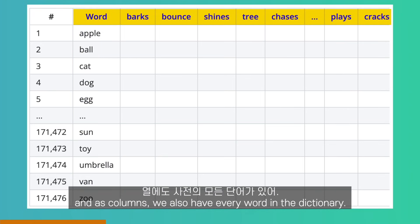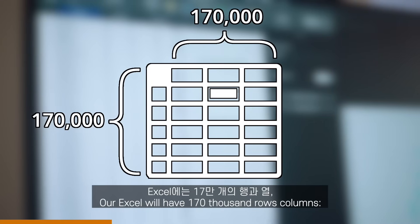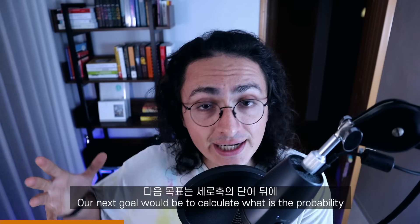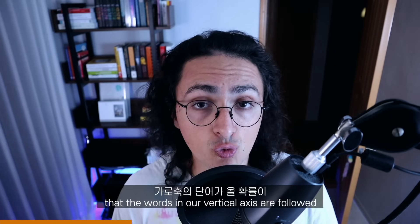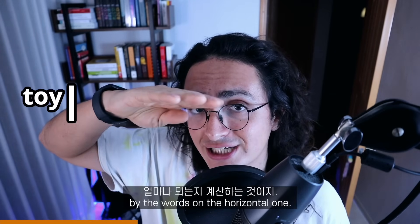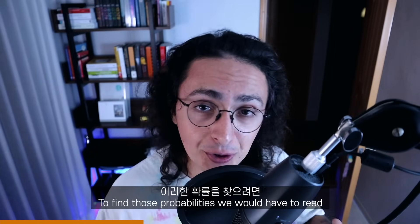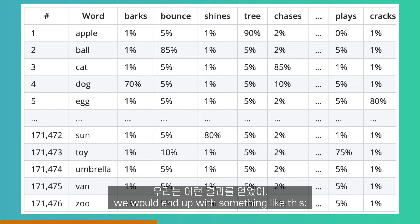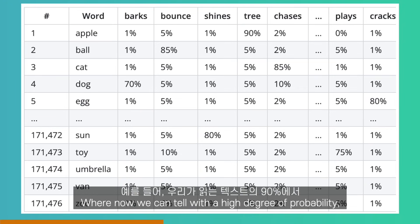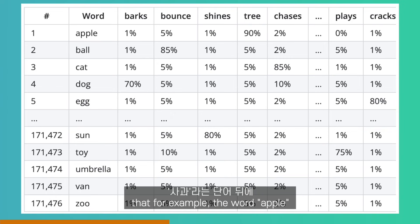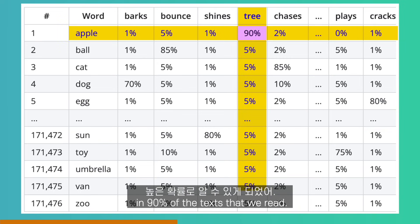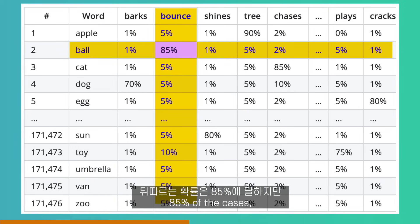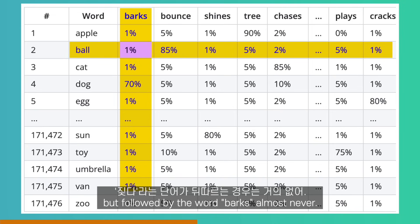As rows we have every word in the dictionary, and as columns we also have every word in the dictionary. Our Excel will have 170,000 rows and columns — almost 29 billion cells. Our next goal would be to calculate the probability that the words on our vertical axis are followed by the words on our horizontal one. To find those probabilities, we would have to read as many documents, websites, comments, papers, and books as we can. After a big effort, we'd end up with something like this — where we can tell with a high degree of probability that, for example, the word "apple" is followed by "tree" in 90% of texts, or that "ball" is followed by "bounce" in 85% of cases, but followed by "barks" almost never.